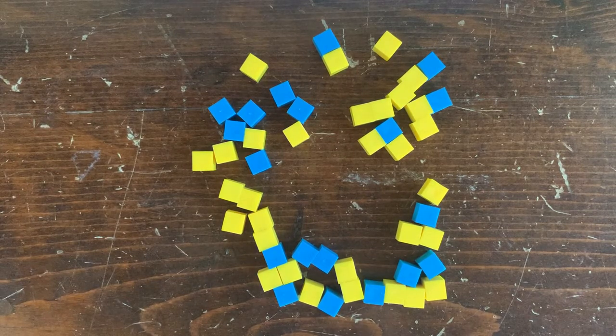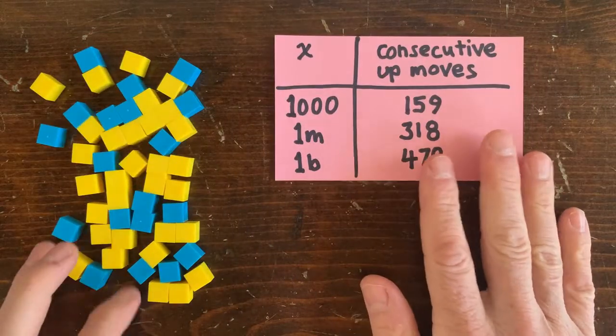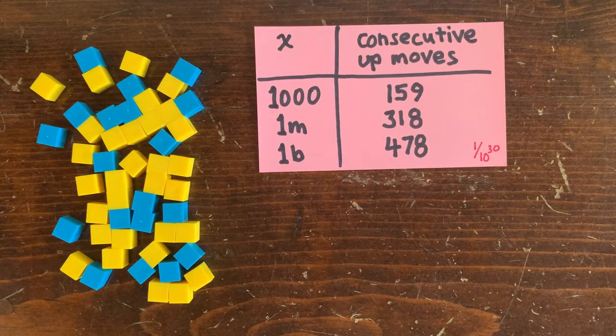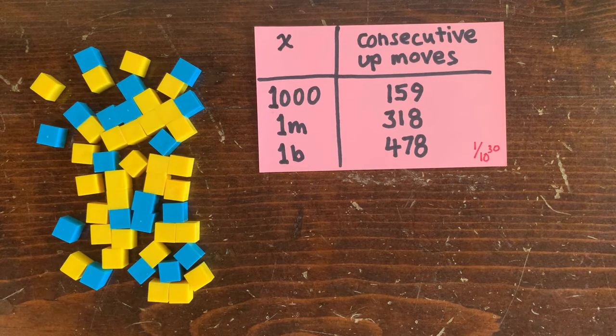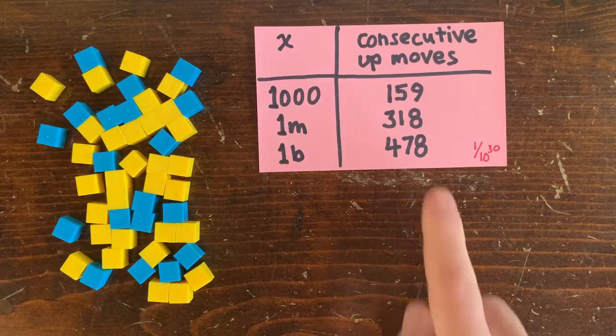And here are some examples. So if a loop has a thousand members, we can rule it out if it has more than 159 consecutive up moves. If it has a million members, we just need 318 consecutive up moves. And if it has a billion members, we just need 478.